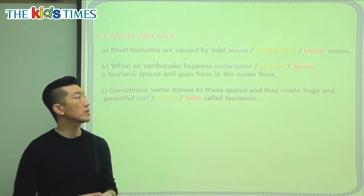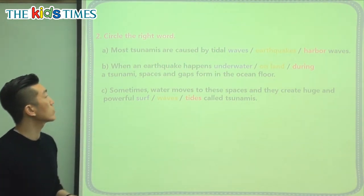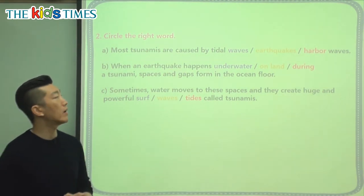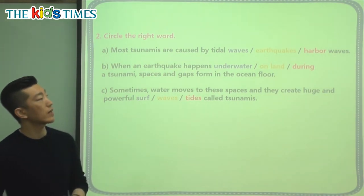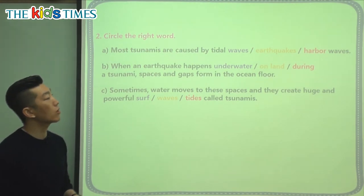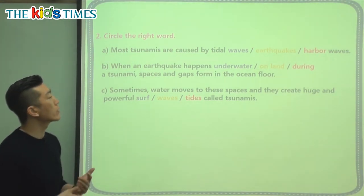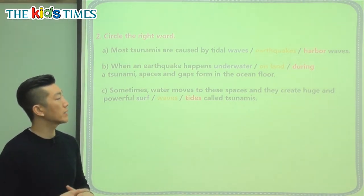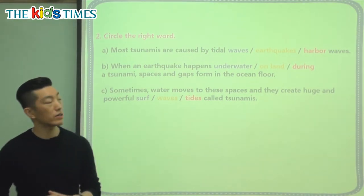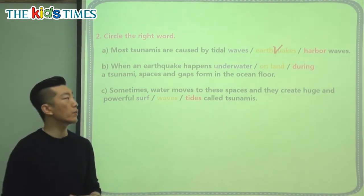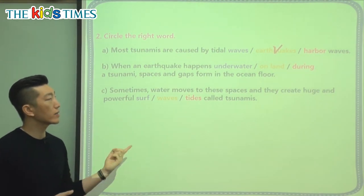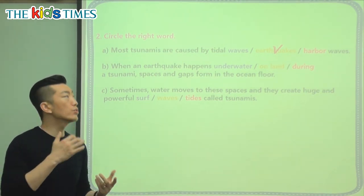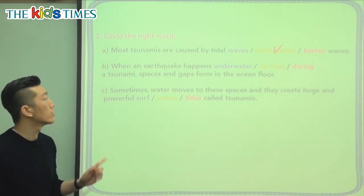Let's look at the sentences and choose the right words. The first sentence says: 'Most tsunamis are caused by' — tidal waves, earthquakes, or harbor waves? What is it that makes tsunamis? We talked about it many times — it's because of earthquakes that cause these huge waves. So because of earthquakes, these huge waves are formed, and that's how tsunamis happen.